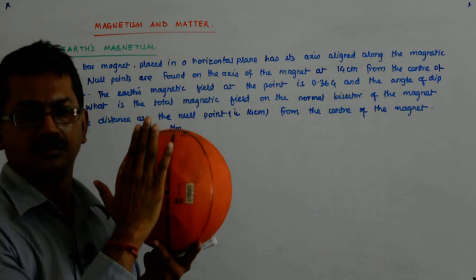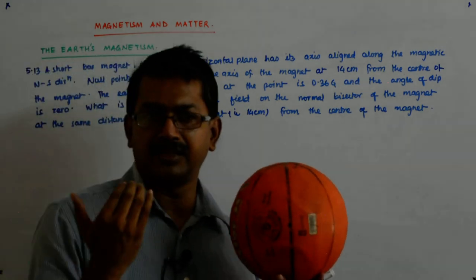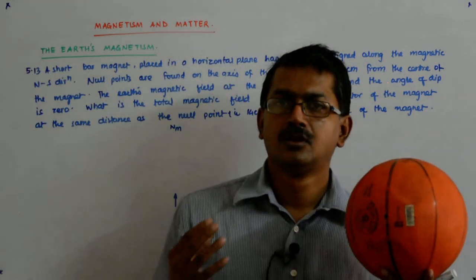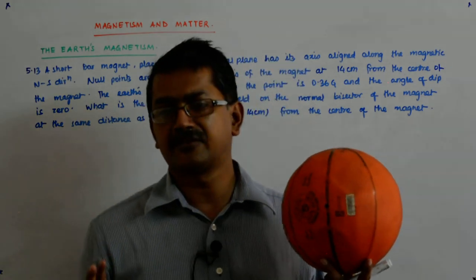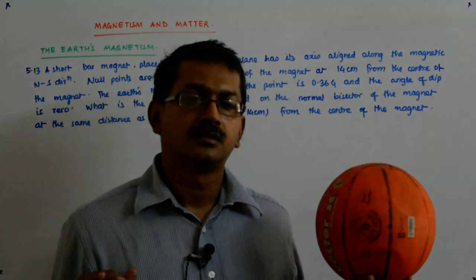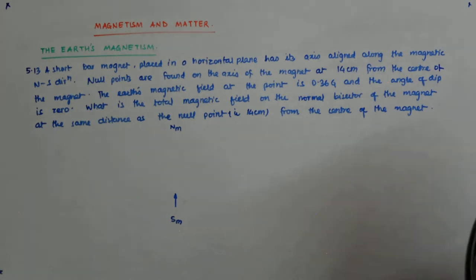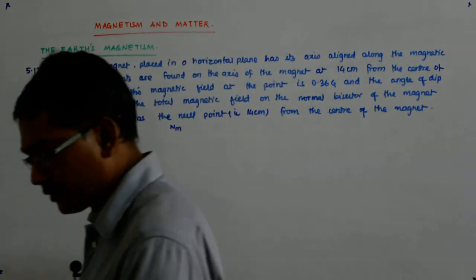So it is something like this. So whatever I feel, the horizontal component is all of it. Whatever is the magnetic field, all of it is in the form of the horizontal component. So if I have to put a magnet.